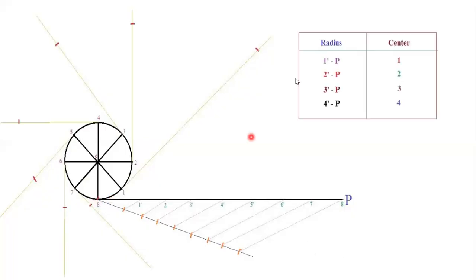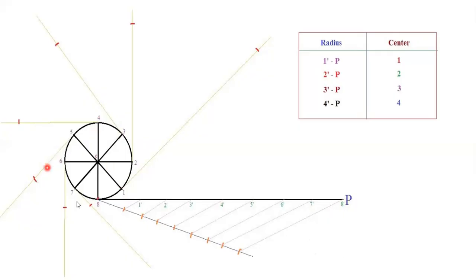Now take the radius from 1 dash to P. Keep the compass at 1 dash, take the distance to P as your radius, set 1 as center, and cut an arc. Then 2 dash to P as radius, 2 as center, cut an arc. Repeat this for 3 dash to P with 3 as center, 4 dash to P with 4 as center, 5, 6, and 7 similarly — each time cutting an arc. The last point is 8, so no arc is needed there.